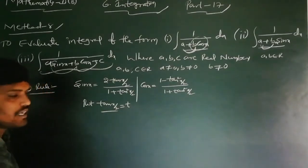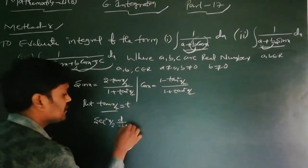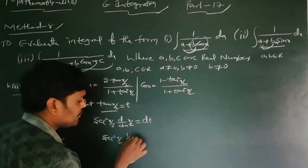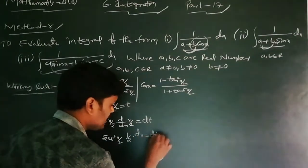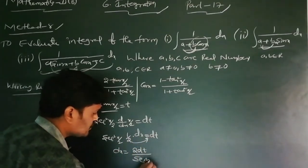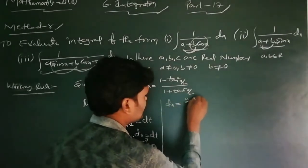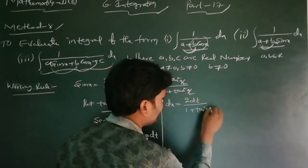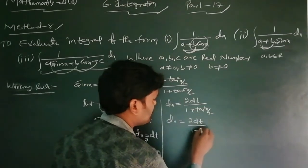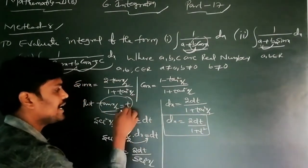Taking the derivative of t = tan(x/2): sec²(x/2) · (1/2) dx = dt. So dx = 2 dt / sec²(x/2). Using the identity sec²(x/2) = 1 + tan²(x/2) = 1 + t², we get dx = 2 dt / (1 + t²). The value of tan(x/2) is t.